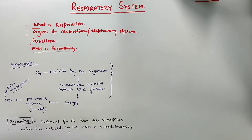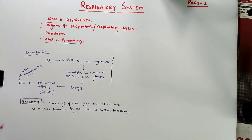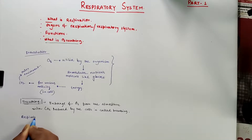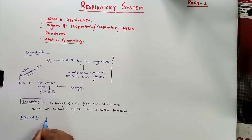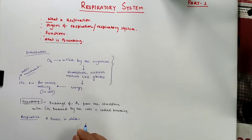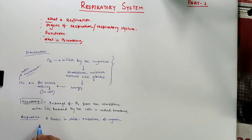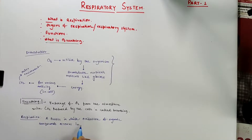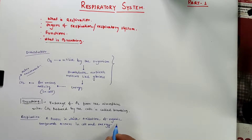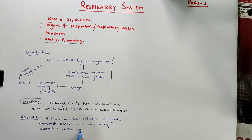What is respiration? Respiration is a process in which oxidation of organic compounds occurs in the cell, and energy is released. This process is called respiration.